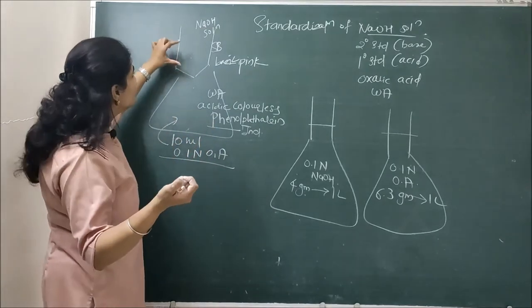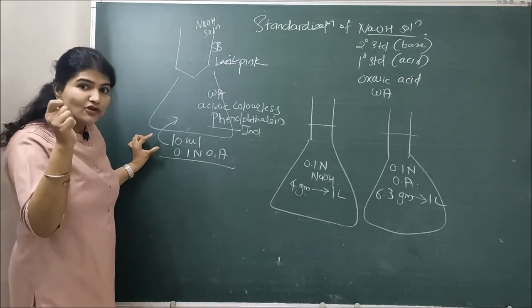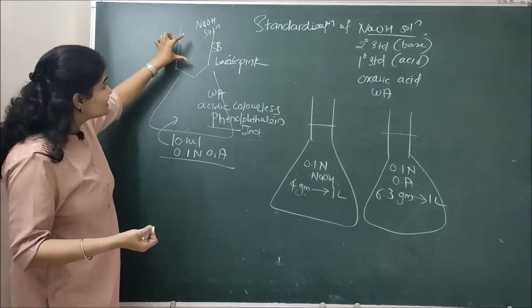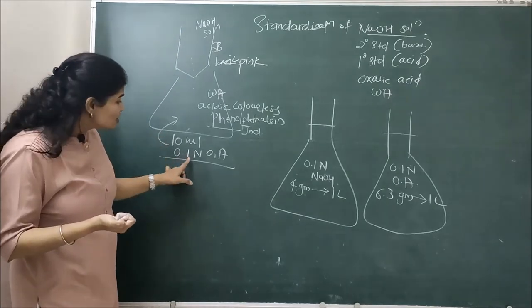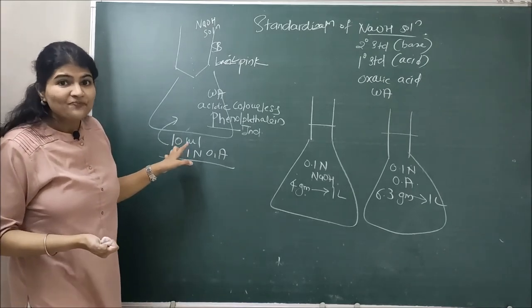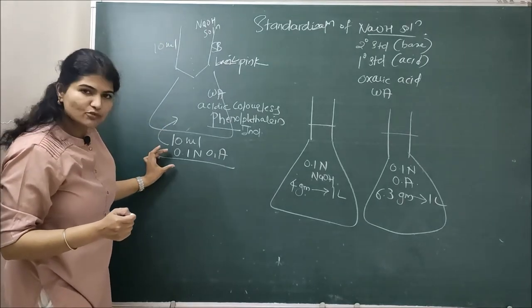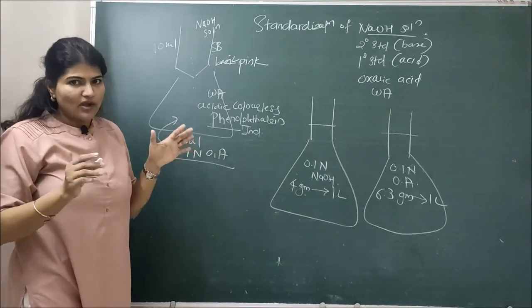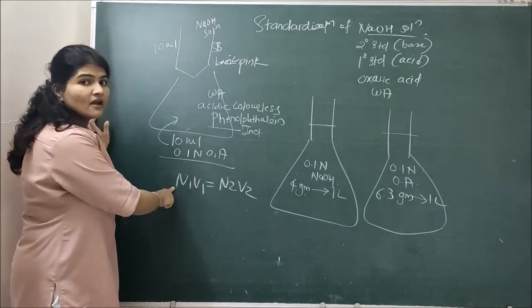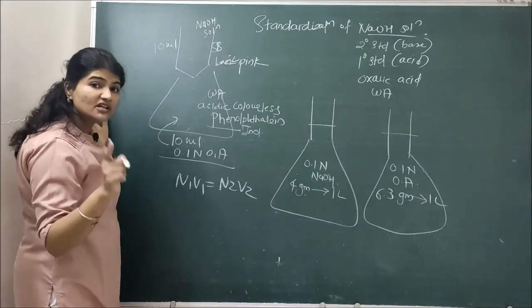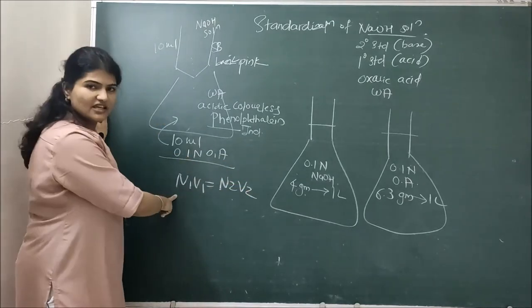At the end point, I have a particular reading for the volume of NaOH consumed for complete reaction with 10 ml of 0.1 normal oxalic acid. I found out the exact volume of NaOH solution required to completely react with a known-normality, known-volume solution. Now I apply the simple equation: N1V1 = N2V2. This equation works for normal solutions; N stands for normality. If you are using molar solutions, replace it with M1V1 = M2V2. Since I have taken normal solutions, I will use N1V1 = N2V2.